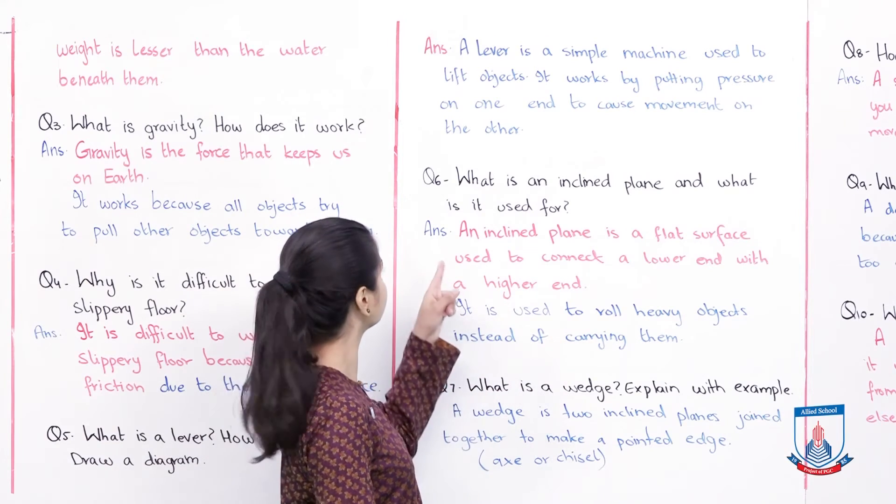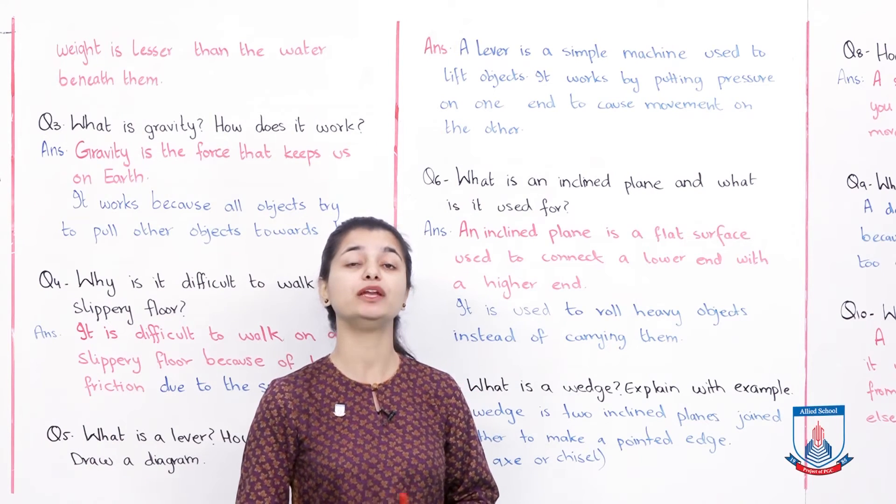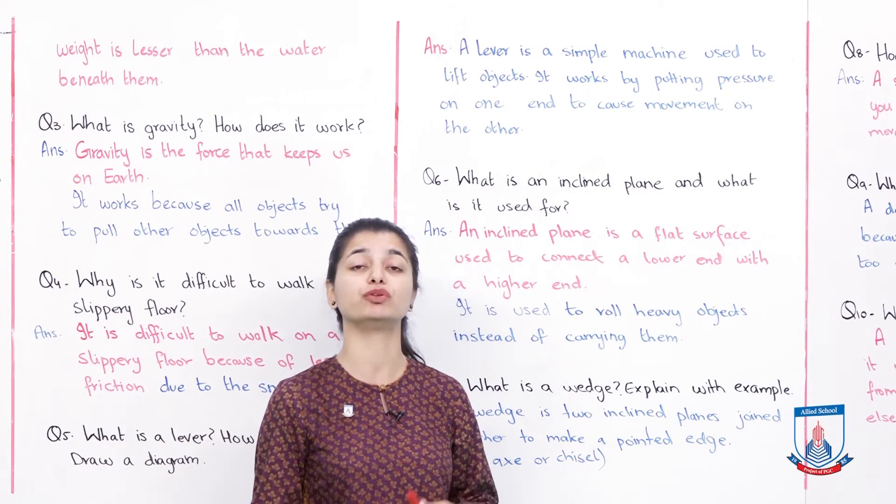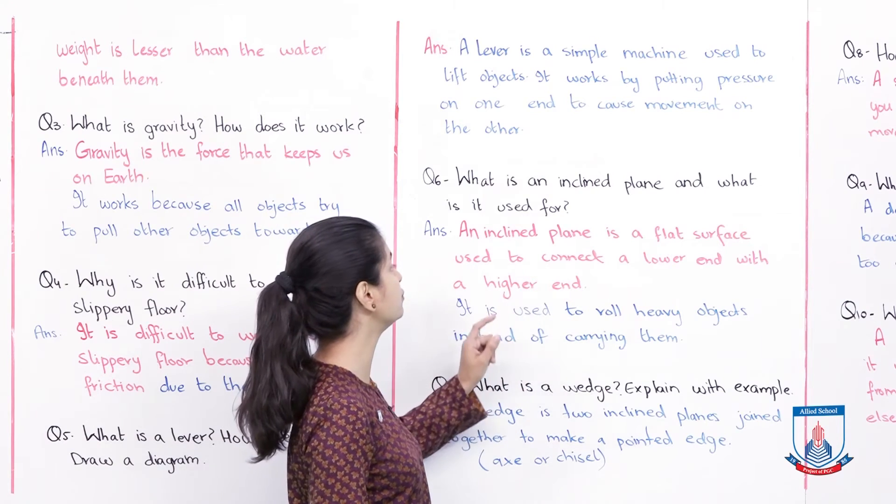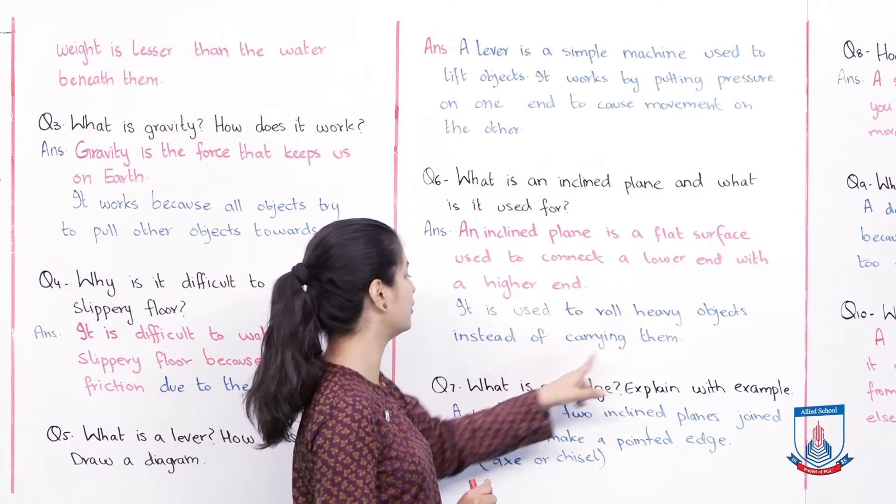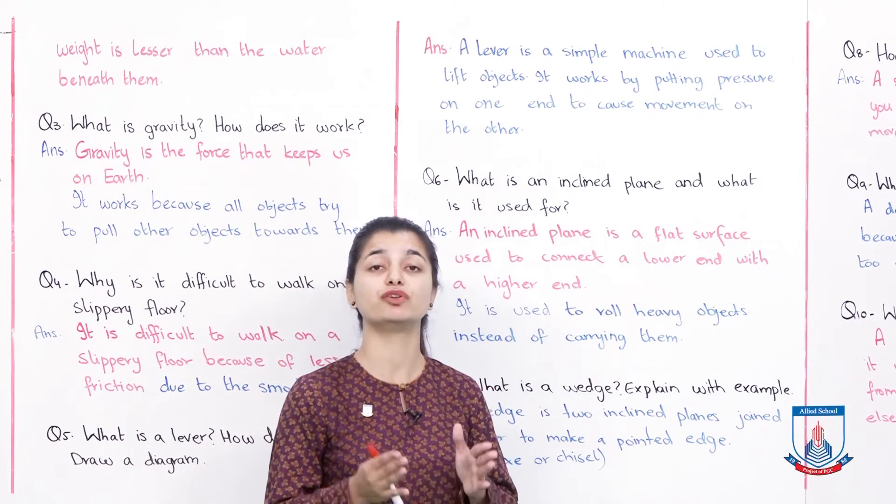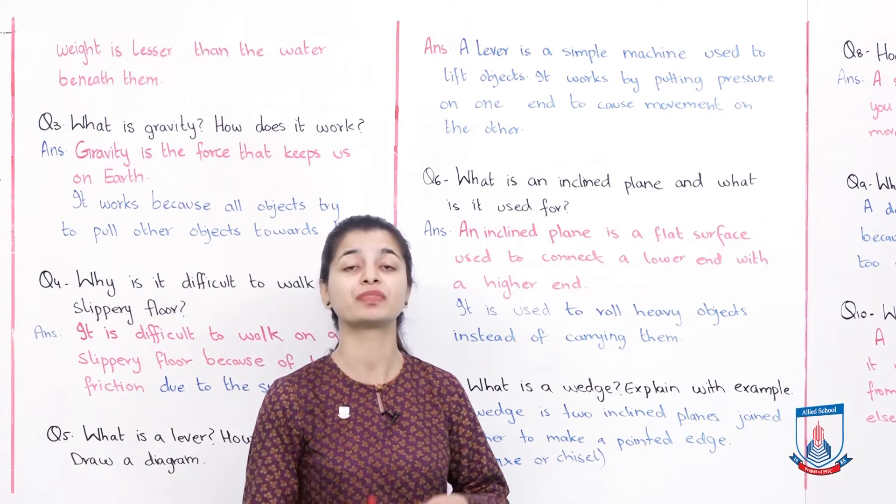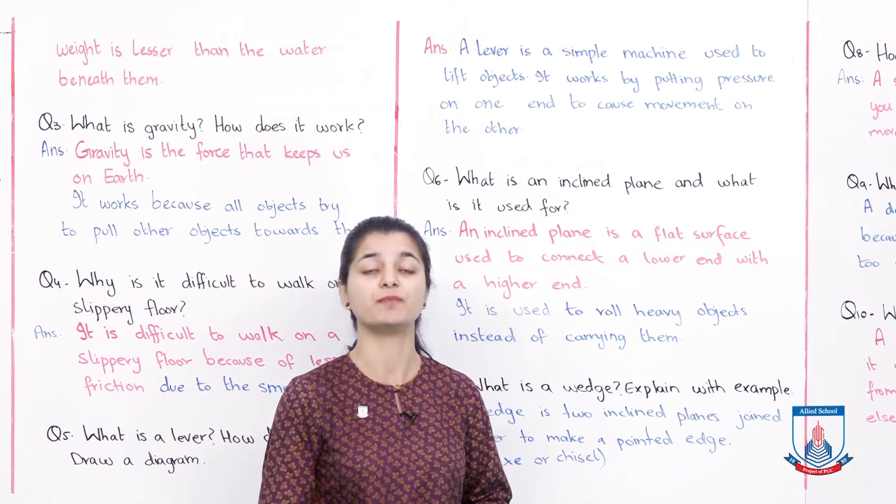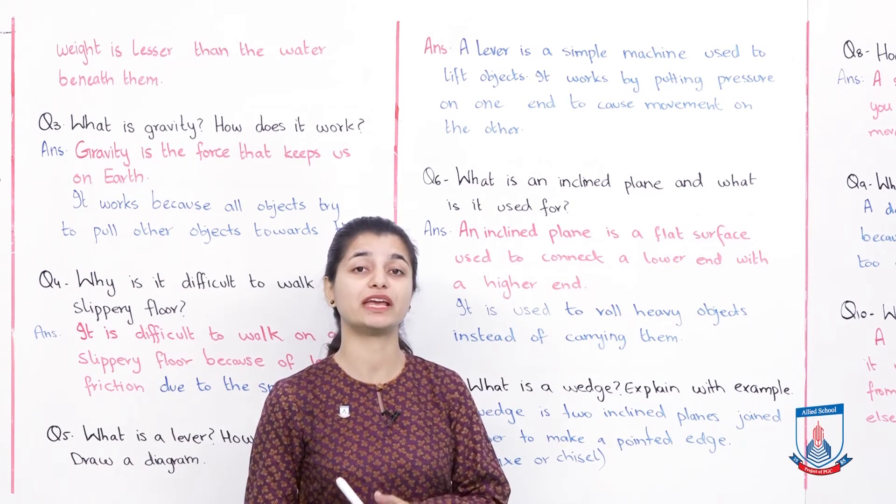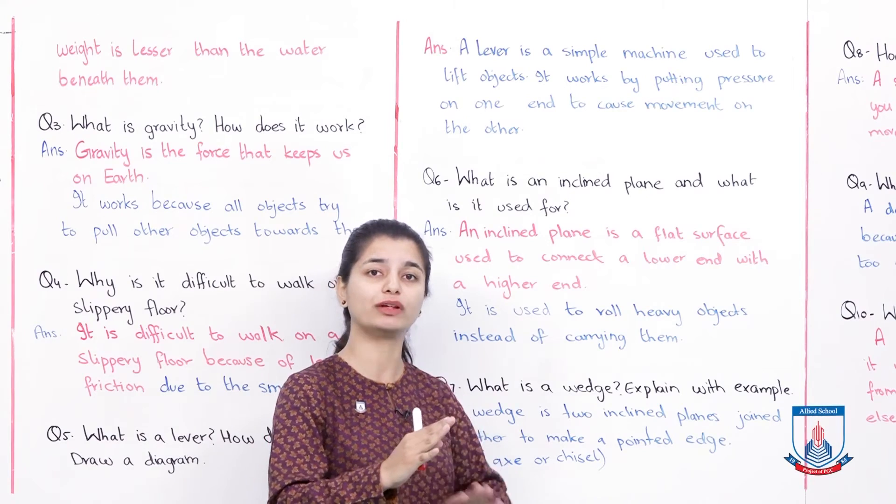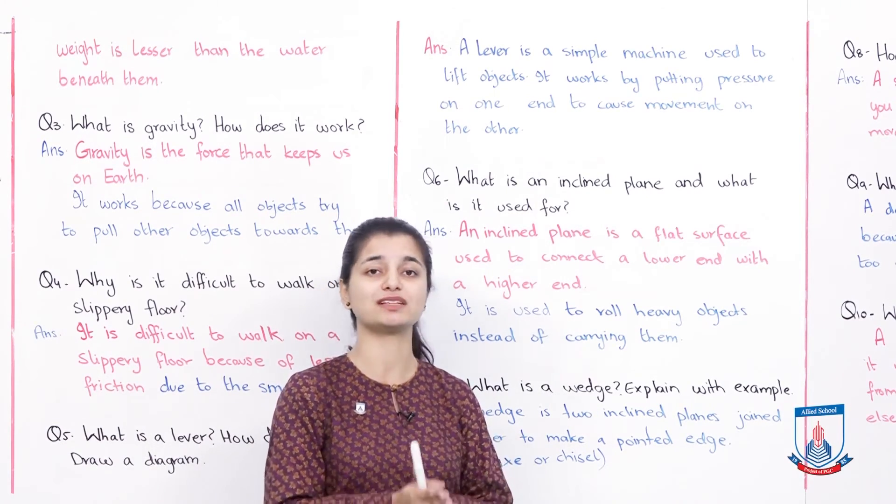Question 6: What is an inclined plane and what is it used for? An inclined plane is a flat surface used to connect a lower end with a higher end. It is used to roll heavy objects instead of carrying them. Examples include ramps for wheelchairs going up stairs, or when moving furniture into a truck—you put a ramp on the truck and the furniture slides easily.